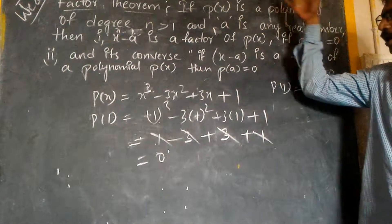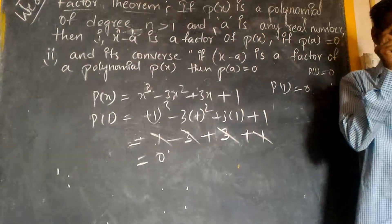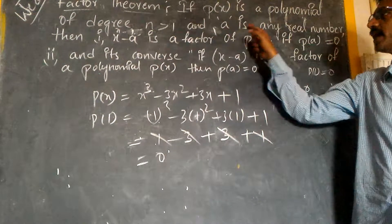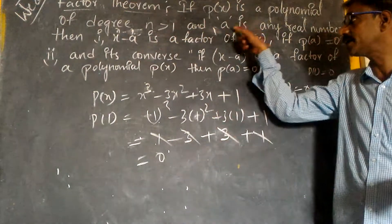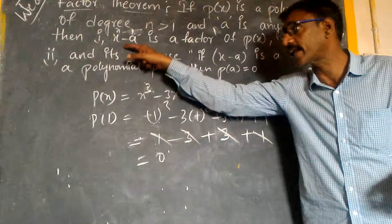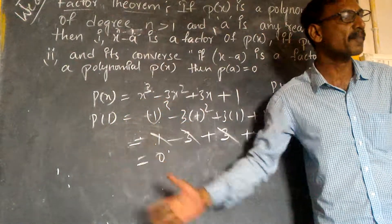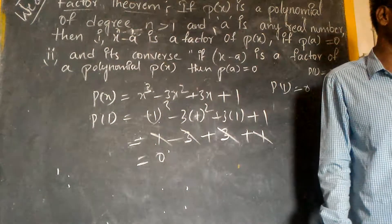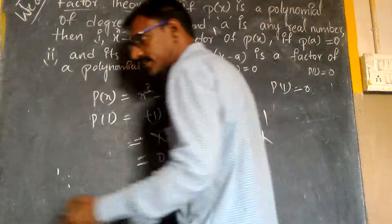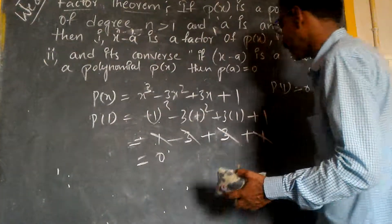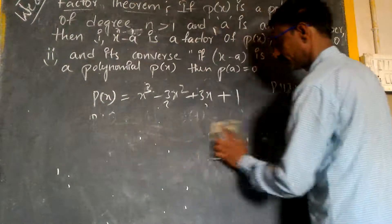If p of x be a polynomial of degree greater than 1, and a be a real number, then x minus a is a factor of p of x if and only if p of a must be equal to 0. This is the factor theorem. By long division method, let us verify it.